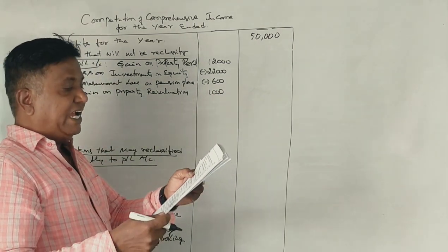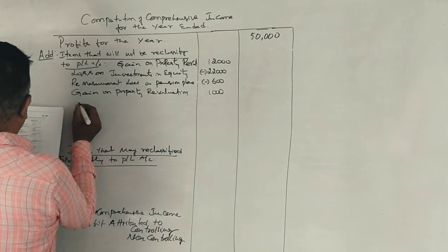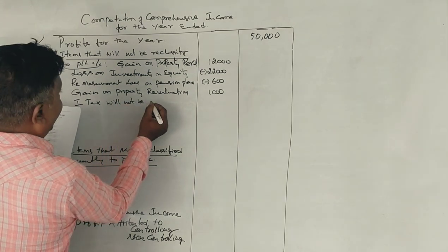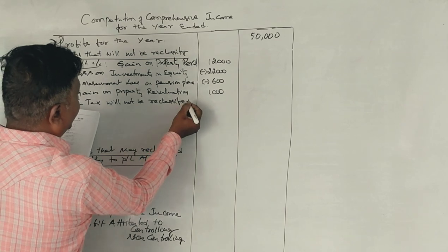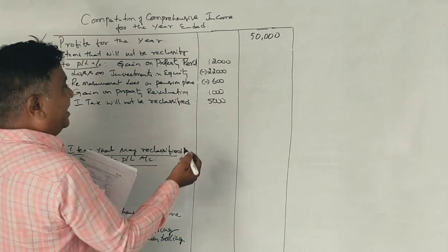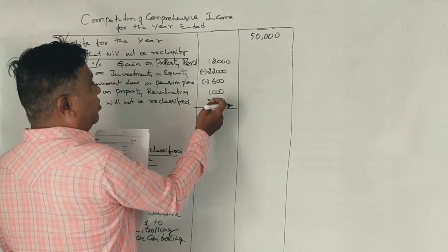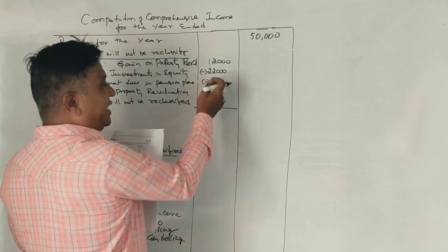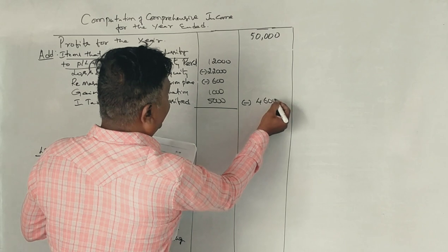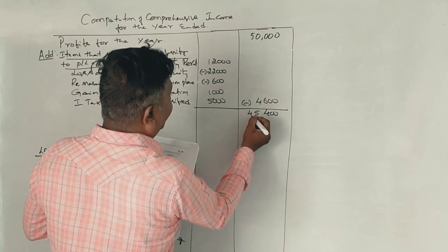Next, income tax related to items that will not be reclassified. This income tax will not be reclassified to items — it is minus 4,600. The subtotal comes to 45,500.